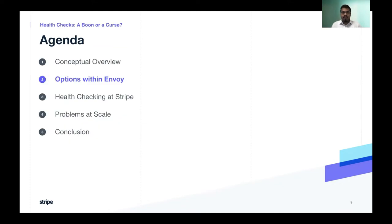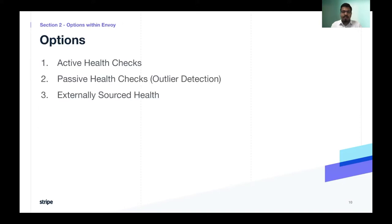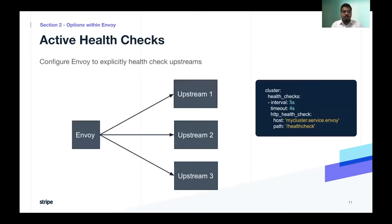Now that we know what health checks are, let us look at some options within Envoy for health checking. There are mainly three options: active health checks, passive health checks or outlier detection, and externally sourced health. Active health checking is where you configure Envoy to make explicit calls to these upstream services to figure out if they are healthy or not. These calls are made in addition to the regular data plane traffic that Envoy is servicing.